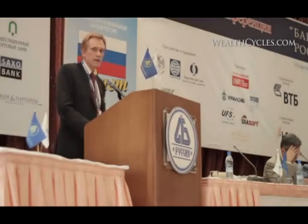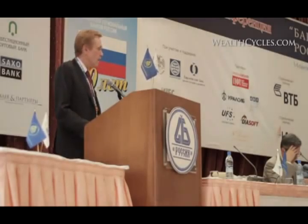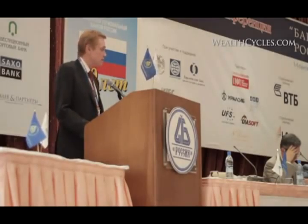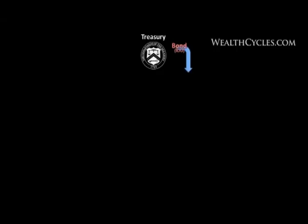This is how currency is created, and what I've found is that almost nobody really knows how currency is created. In the United States, the Treasury issues a bond, which is nothing but an IOU, and the primary dealers — the biggest banks — come and show up at the Treasury auctions and buy those bonds.